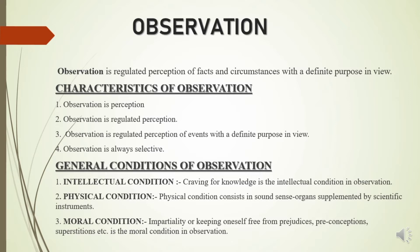For correct observation, the observer must be intellectually fit. It means that the observer must be attentive to know the reason of an event. That is the intellectual condition. Next, the physical condition. Physical condition consists in sound sense organs supplemented by scientific instruments. If the body is not sound, then the sense organs have chances of making mistakes. Therefore, healthy organs are the physical condition for correct observation.